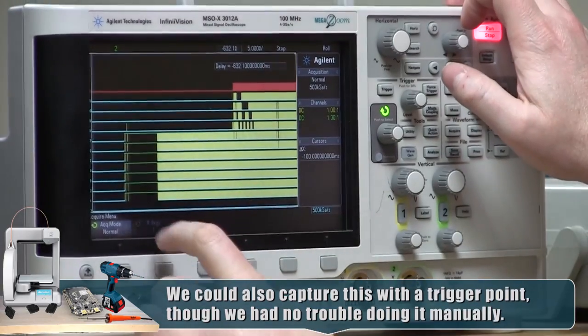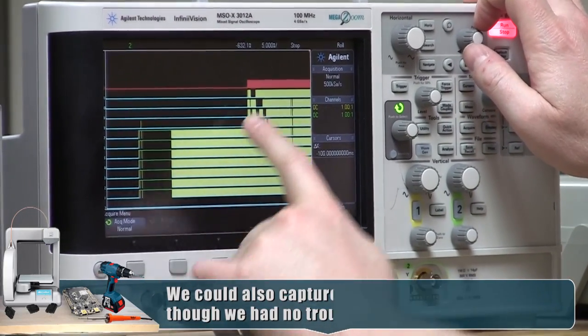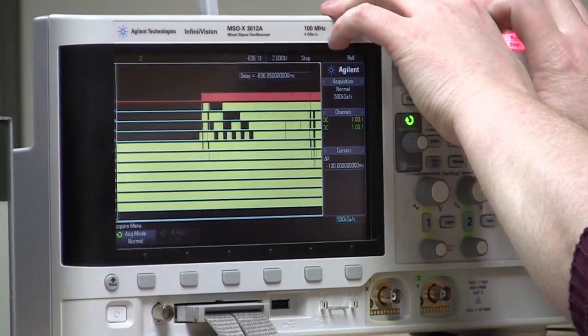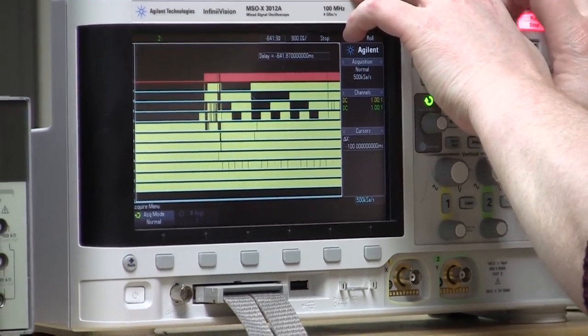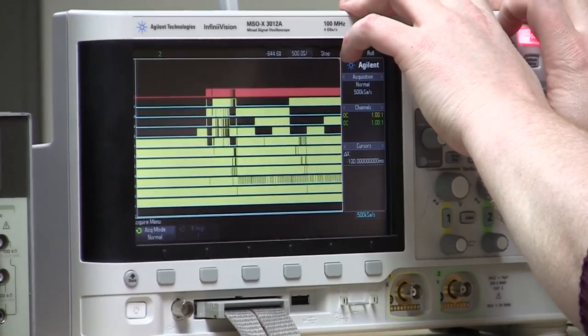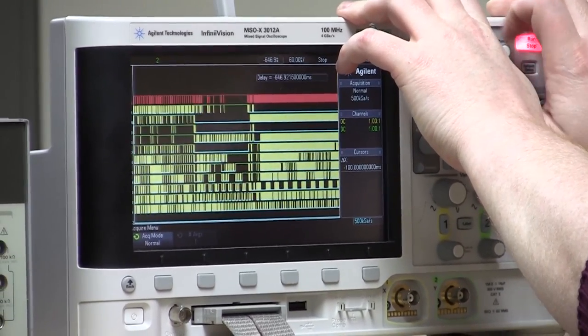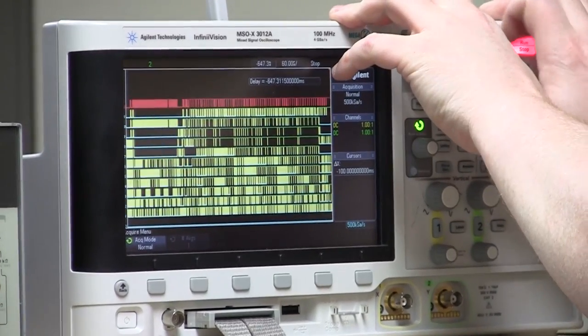All right, so here's D0 through 7. That's when it starts up and then here, where it asserts the full bus, that's actually when it's trying to read the cartridge. Now we can zoom in on these and basically convert them into binary to figure out what they are. So this is actually the processor working.